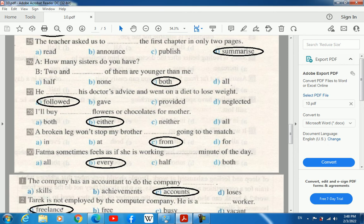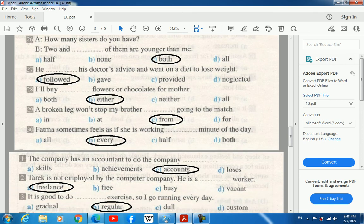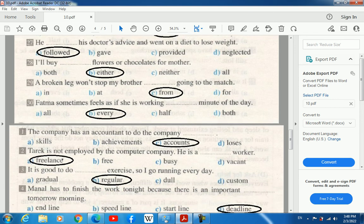25. The teacher asked us to summarize the first chapter in only two pages. 26. A: How many sisters do you have? B: Two, and both of them are younger than me. 27. He followed his doctor's advice and went on a diet to lose weight.